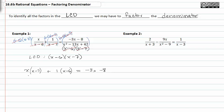From here, we can distribute the factors outside parentheses, which gives us x squared minus seven x plus x minus six, because one is not going to change anything, equals negative three x minus eight.